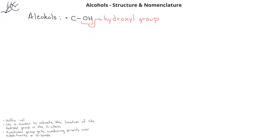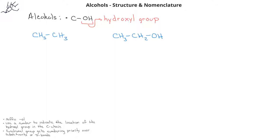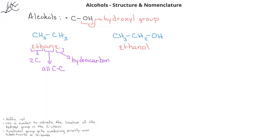Let's look at a few examples of alcohols and see how to name them. We can start by differentiating between ethane and ethanol. With ethanol, we do not use a number to indicate where the hydroxyl group is located, because no matter which carbon it is on, that will automatically be the first carbon. We also dropped the E from ethane and replaced it with the suffix OL since we have a hydroxyl group.